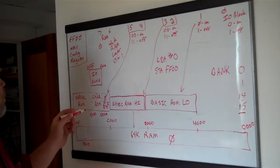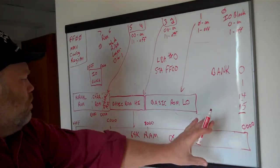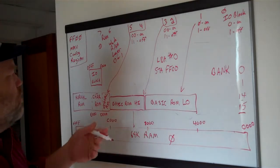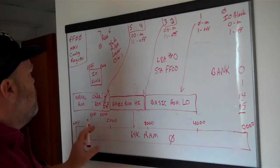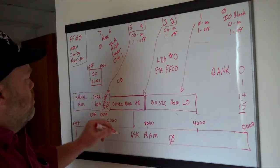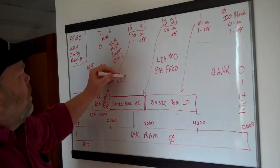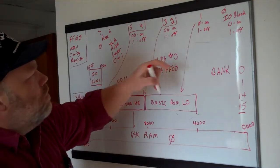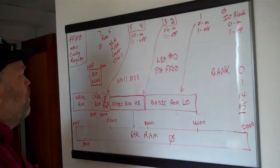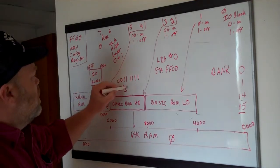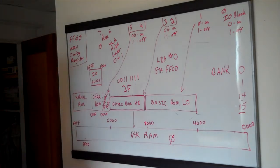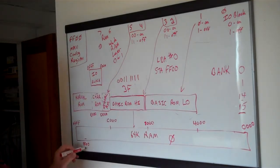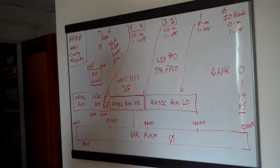If you want a pure RAM configuration — everything off, just space for calculations — walk through: 00 (RAM bank 0), 11 (Kernel off), 11 (Basic High off), 1 (Basic Low off), 1 (I/O block off). That's binary 00111111, which is 0x3F. Storing 0x3F into $FF00 gives you pure RAM with all the ROM and I/O stuff turned off — except the MMU register at $FF00 itself, which is always accessible so you can turn things back on.